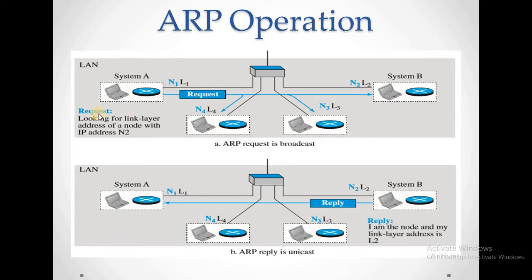The request message is looking for the link layer address of a node with the IP address AN2. System A broadcasts this message to all the nodes in the network, requesting that the system which has the network address AN2 send its logical address. As soon as system B receives that request, it replies back, sending its logical address L2 for the network address AN2. The reply states: I am a node and my link layer address is L2. This reply is a unicast — it is sent only to system A.